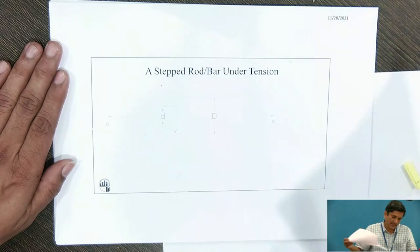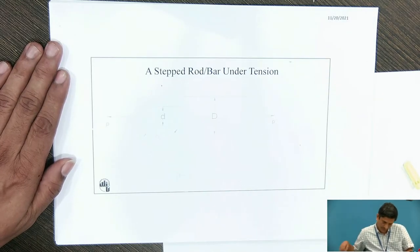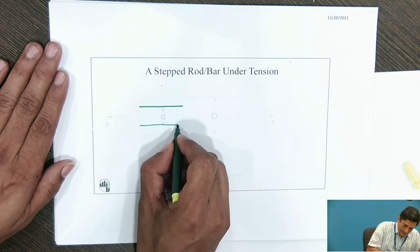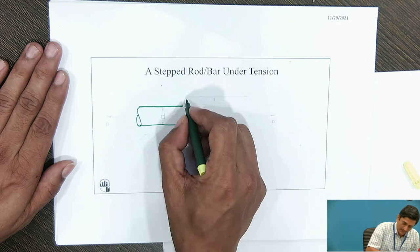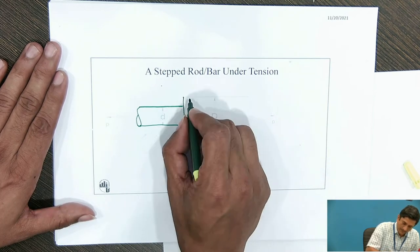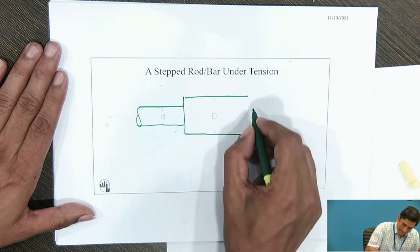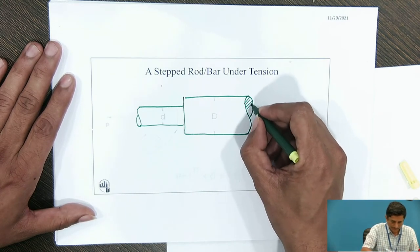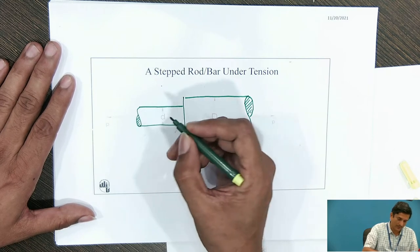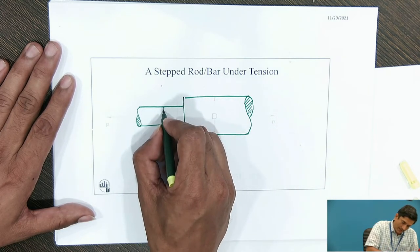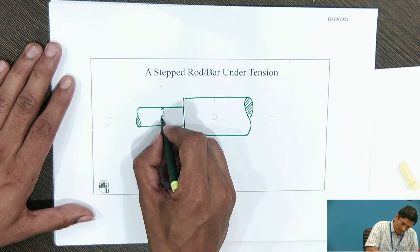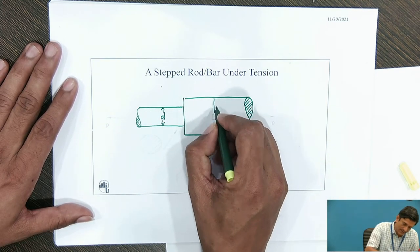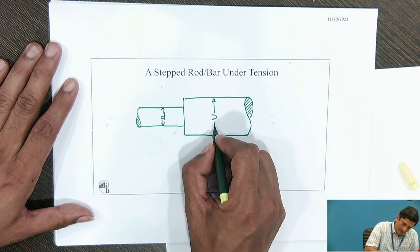Let us see the next case. The straight bar is changed — let us use a different type of rod. I will call it a stepped rod or a stepped bar. It is a solid bar; however, it is stepped. The diameter at the smaller zone is small d, whereas the larger portion has capital D as its diameter.